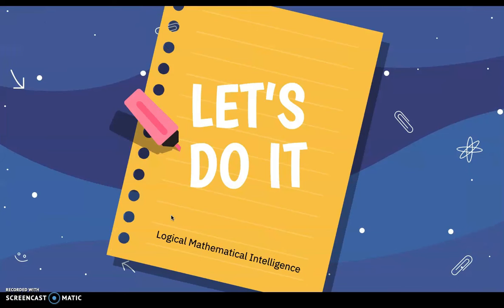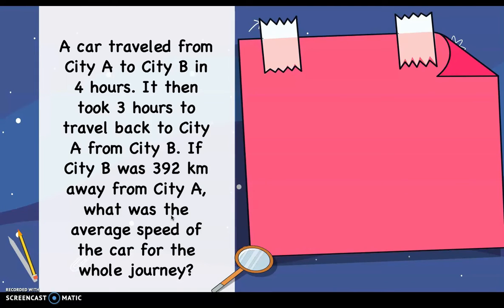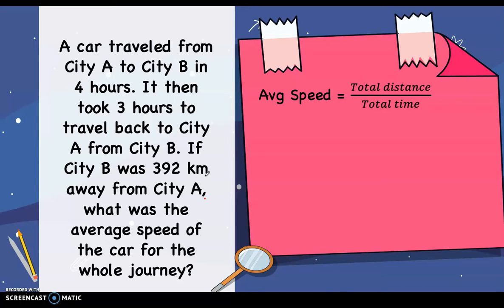Let's have more examples. A car traveled from city A to city B in 4 hours, then took 3 hours to travel back from city B to city A. City B was 392 kilometers away from city A. What was the average speed of the car for the whole journey? Since the distance from city B to city A is 392 kilometers, the distance from city A to city B is also 392 kilometers, as no different route is mentioned. The time going was 4 hours and it took 3 hours coming back.